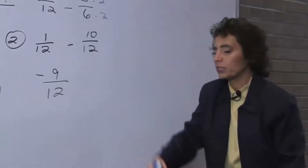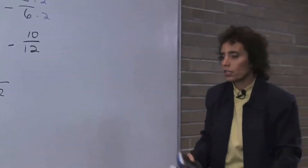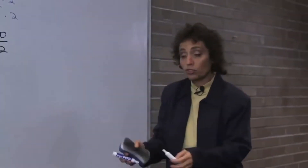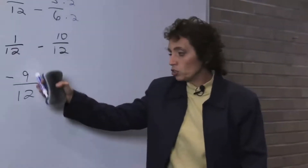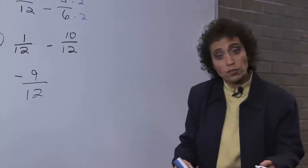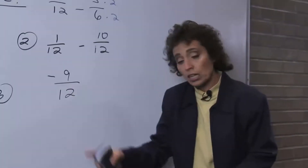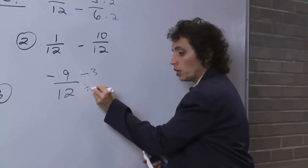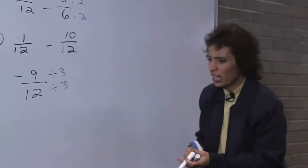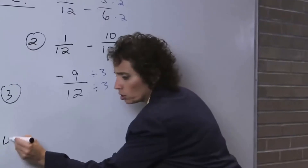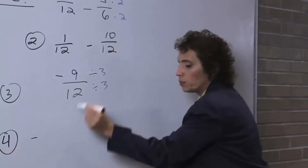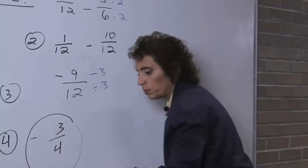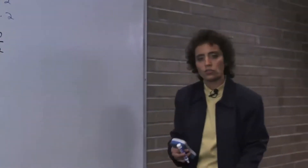It's okay to put that negative anywhere — top, bottom, middle, doesn't matter. We have to make sure this is reduced. We look at 9 and 12 and see if they have a factor in common — they do. 3 divides into both. So we divide by 3. The fraction is still negative — don't let the negative haunt you, just bring it down. 9 divided by 3 is 3, 12 divided by 3 is 4. So the answer to this problem is negative 3 fourths.